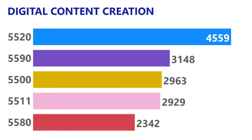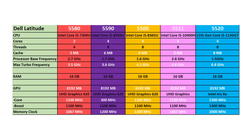The 5590 surprisingly does quite well for a machine which is three years old. It's just slightly slower than the 5500 in terms of processing power, yet it comes out a little bit higher than the 5500. I didn't have a 5510 to run this benchmark on, but the processor in the 5510 is just slightly below the 5511. The 5580 comes in right at the bottom. All of these machines had Intel Core i5 processors of different generations — the 5520 being Intel's 11th generation and the 5511 being a 10th generation processor.